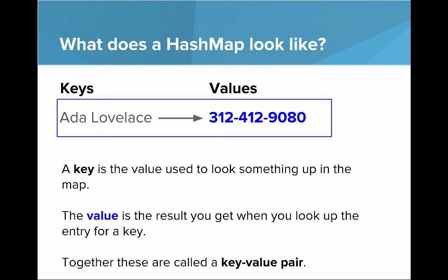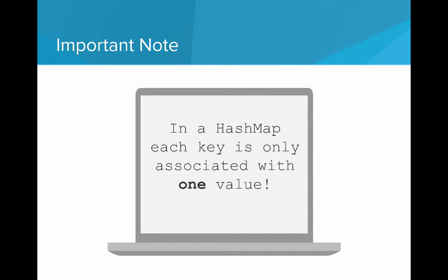Together, these are called a key-value pair. So both of those together, that's the key-value pair in blue. So there's an important note about a hash map, is that in a hash map, each key is only associated with one value.